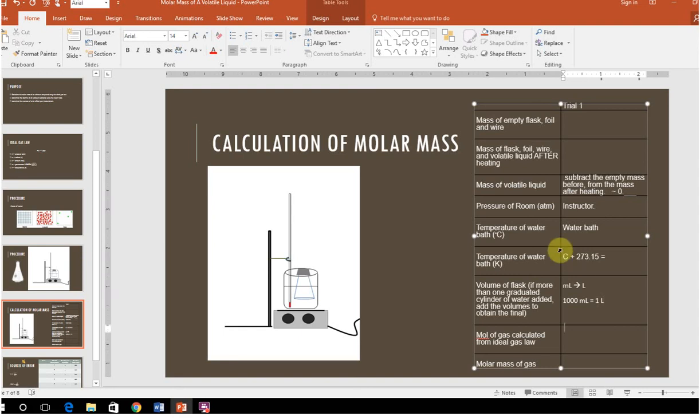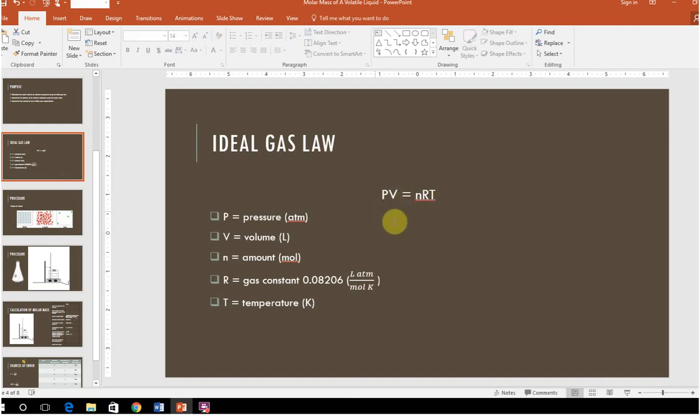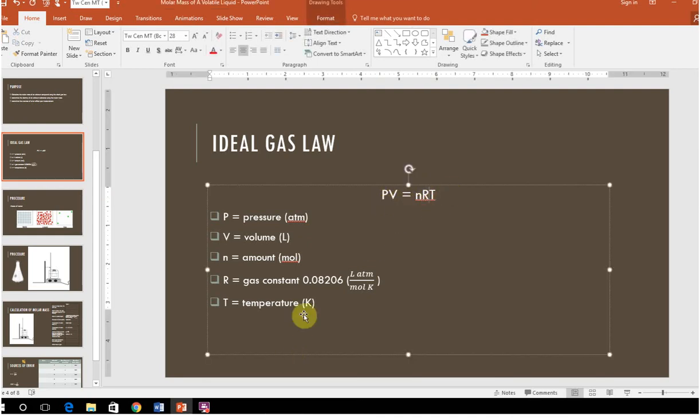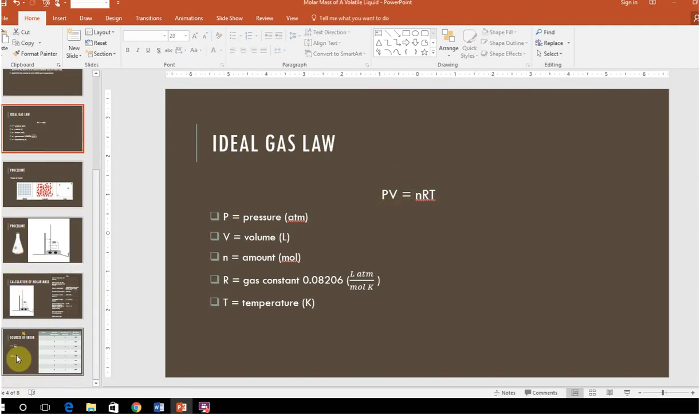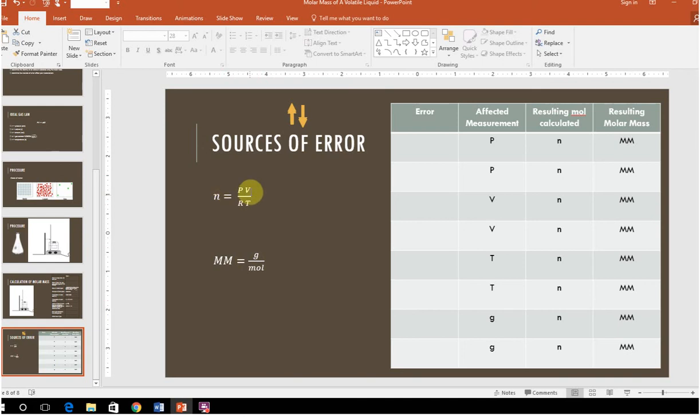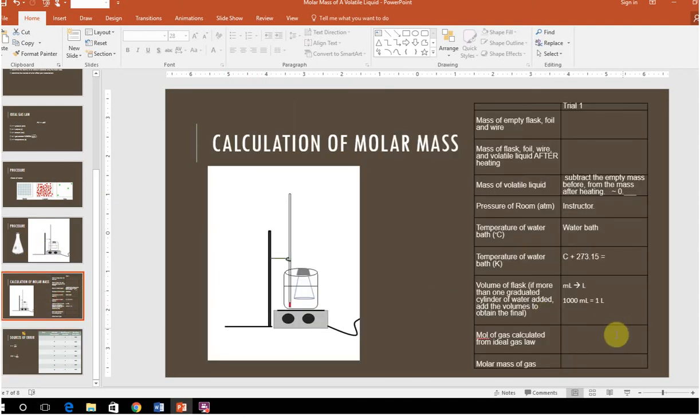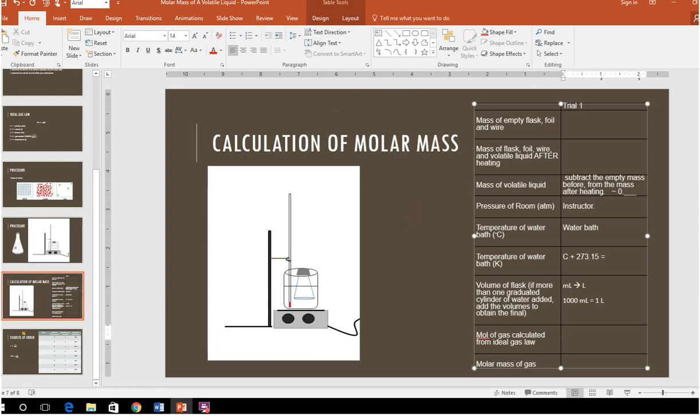Now, once you have the pressure of the room from the instructor, the temperature of the water, which we're assuming is the same as the gas in Kelvin, the volume in liters, we can plug it into that ideal gas law to find moles. We know PV equals nRT. So to solve for n, you would divide both sides by RT, and you're going to be left with PV divided by RT equals n. And so that's how you're going to get this measurement here.